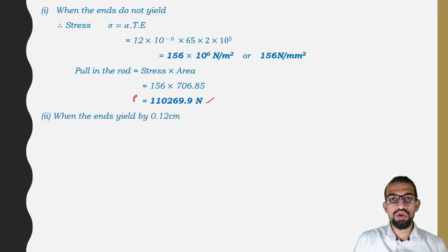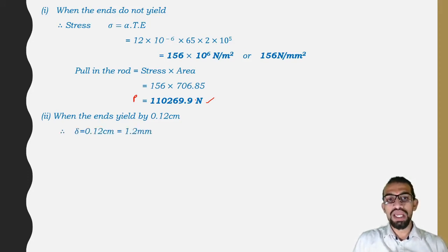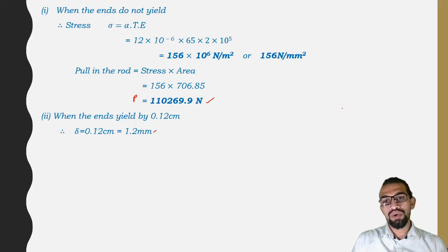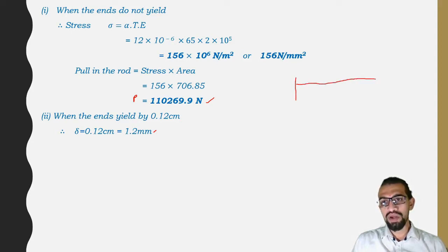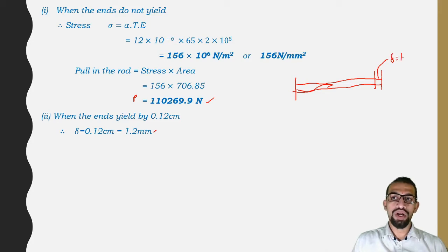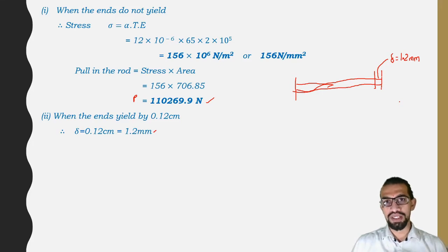When the ends yield by 0.12 cm = 1.2 mm, delta = 1.2 mm. This means the fixed ends allow a small movement of 1.2 mm, which is the delta — the amount by which the end has moved.